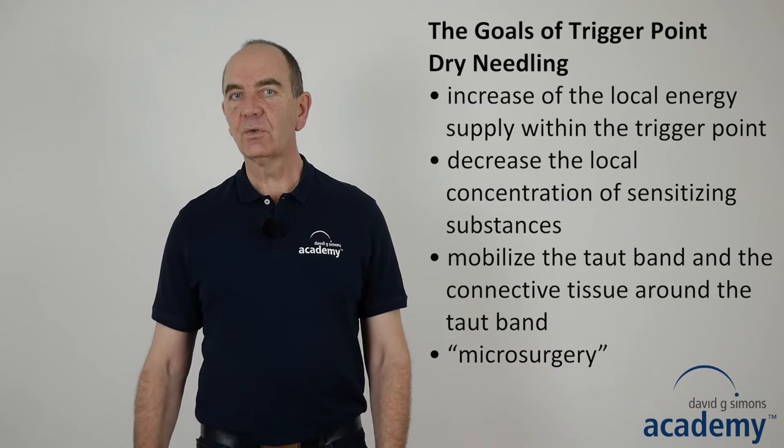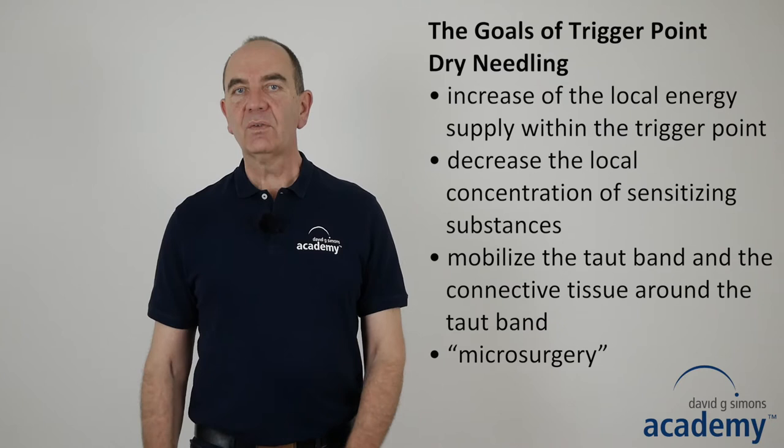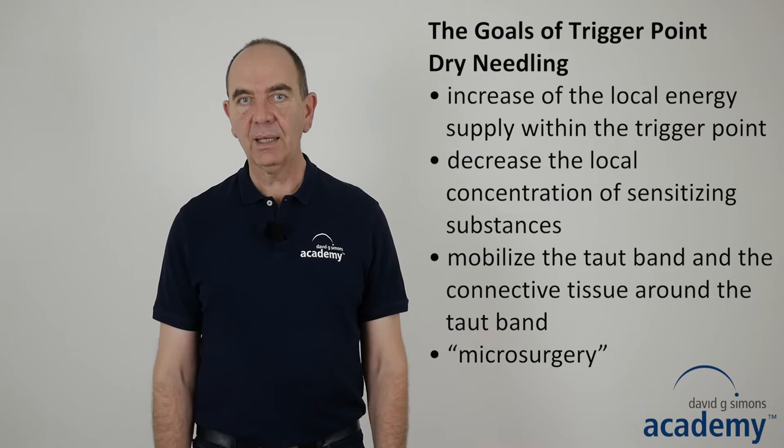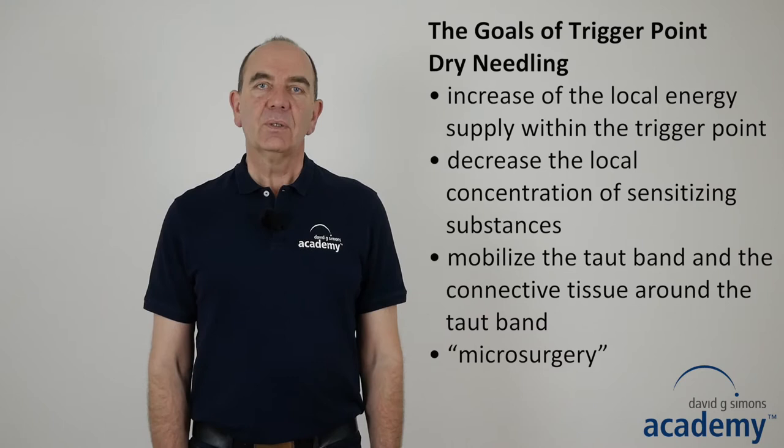Based on the knowledge about the pathophysiology of myofascial trigger points, the goals of trigger point dry needling are to increase the local energy supply within the trigger point by increasing the blood circulation, to decrease the local concentration of sensitizing substances, and to mobilize the taut band and the connective tissue around the taut band. In addition, dry needling can be considered as a form of microsurgery to get rid of contraction knots.